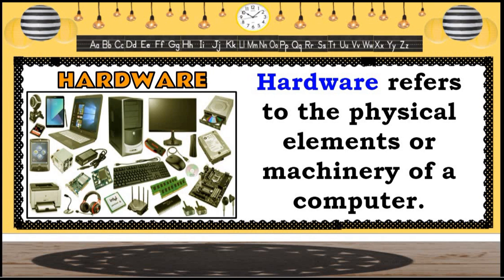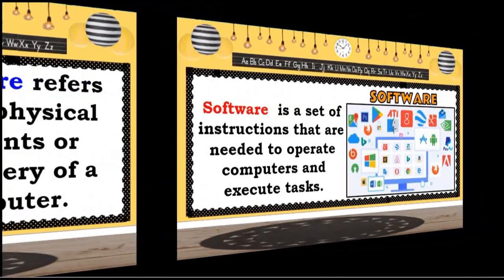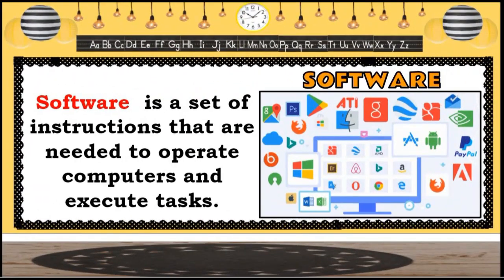On the other hand, software is a set of instructions that are needed to operate computers and execute tasks. Software is something that we cannot touch. A typical software consists of the applications that make the computer work and tell it what to do.